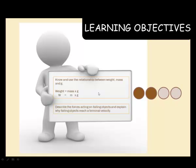That's the end of this video. So I hope we now know and use the relationship between weight, mass, and G using these equations. And hopefully we can now describe forces acting on the falling object and explain why they reach a terminal velocity. If you're not sure, go back and watch the video again or use other resources to back this up. But I want to thank you for watching and listening and goodbye for now.